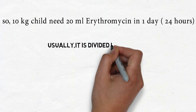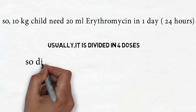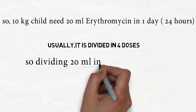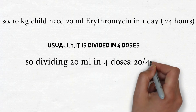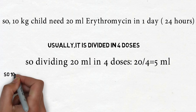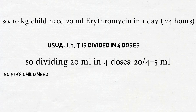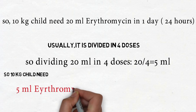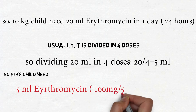Usually erythromycin is divided into 4 doses per day. So dividing 20 ml by 4 doses equals 5 ml per dose. A 10 kg child needs 5 ml of erythromycin — containing 100 mg — four times a day.